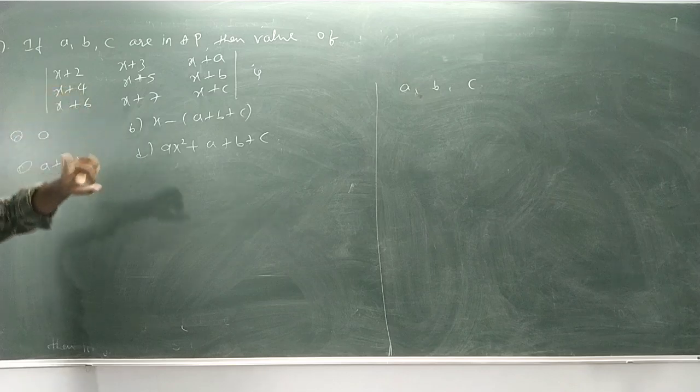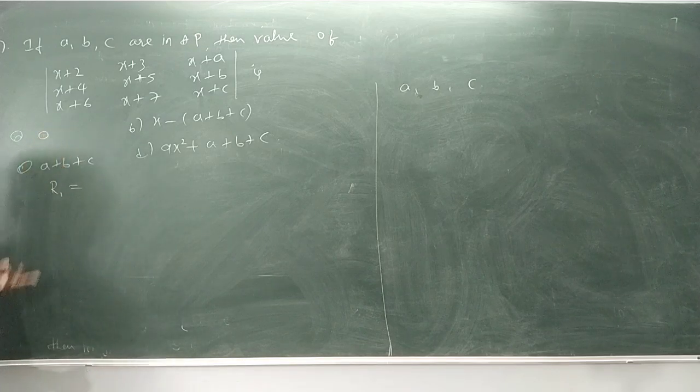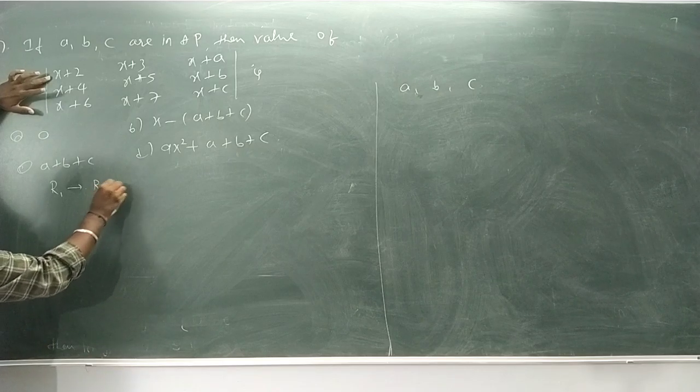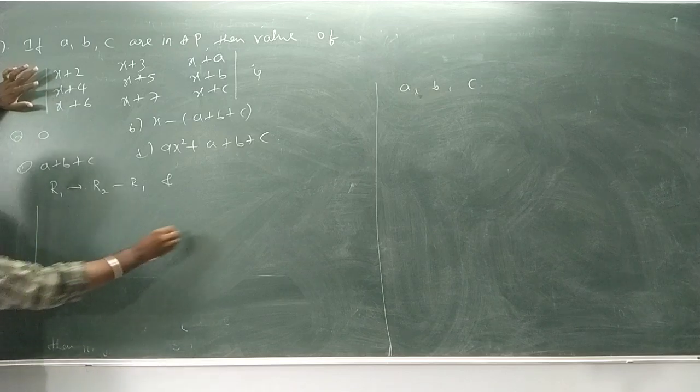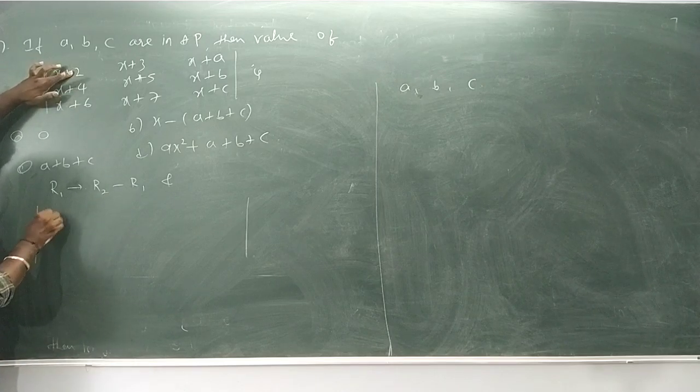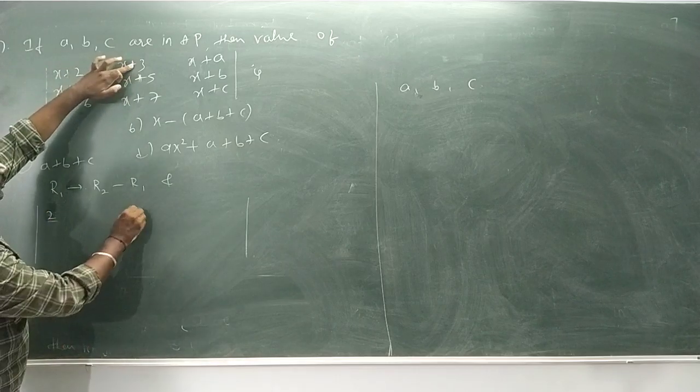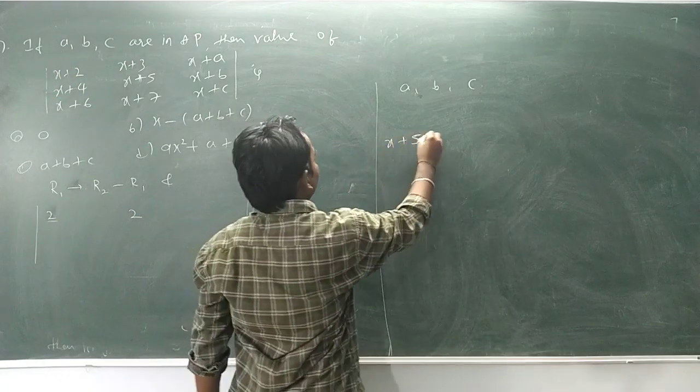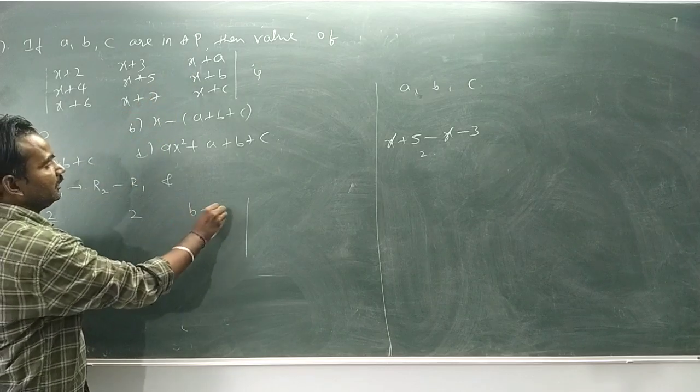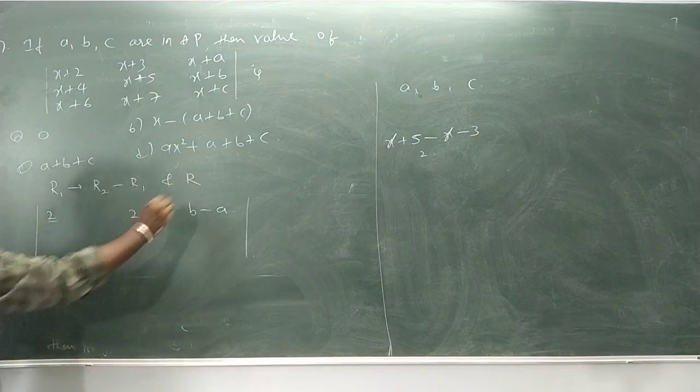Let's change R1. I'll do R2 minus R1. X minus X will be zero, 4 minus 2 gives 2, 5 minus 3 gives 2, so X cancels and we get 2, 2. For R2 minus R1, X terms cancel and we get 2.